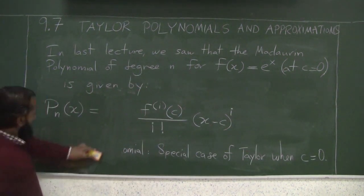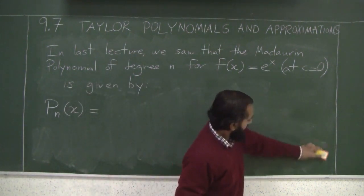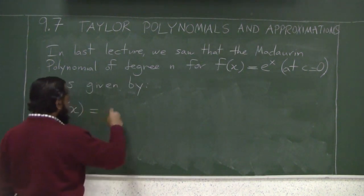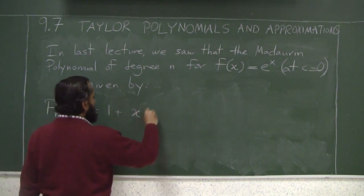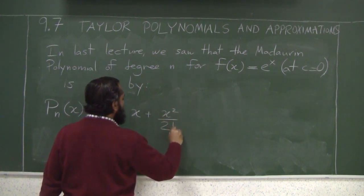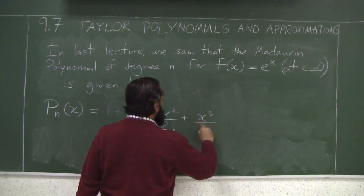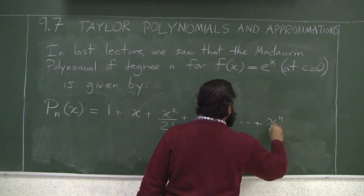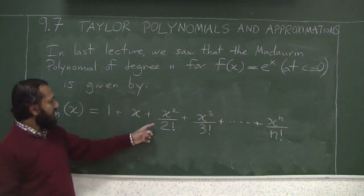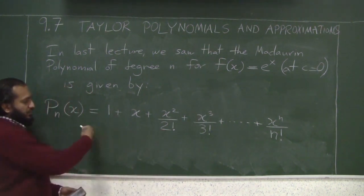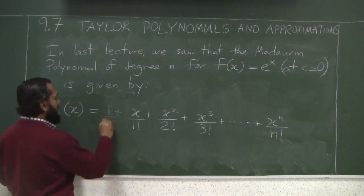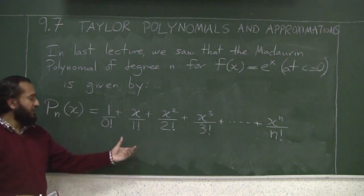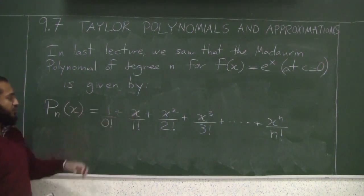is given by - so what was it? This is going to be at c equals 0. So you had the constant term was just 1, then you have x, then you have x squared over 2 factorial, then you have x cubed over 3 factorial plus... plus x to the n over n factorial. Notice that the factorials - if you want to make this look very uniform in notation, you can think of there's a 1 factorial here and there's a 0 factorial here. In the sigma notation, I forgot to mention, the 0 factorial is 1, so we could unify the presentations.